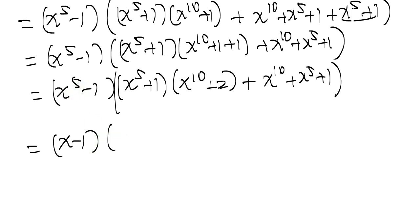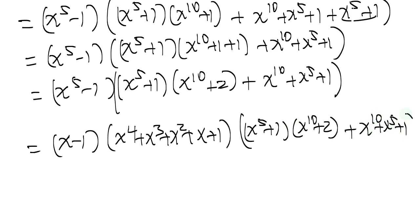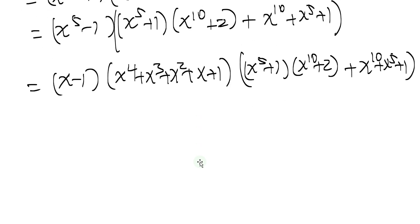Now, x to the 5 minus 1 can be further factored as (x minus 1)(x to the 4 plus x to the 3 plus x squared plus x plus 1). So the full numerator becomes (x minus 1)(x to the 4 plus x to the 3 plus x squared plus x plus 1)(x to the 5 plus 1)(x to the 10 plus 2x to the 5 plus 3). Now let's move to the denominator.